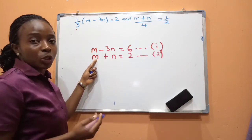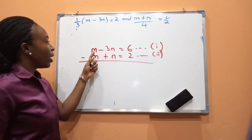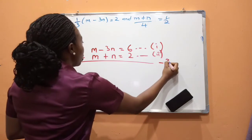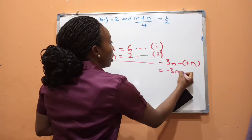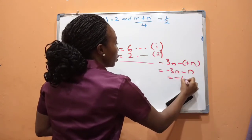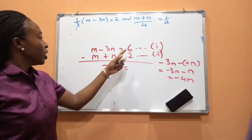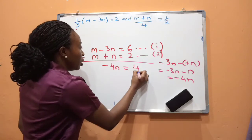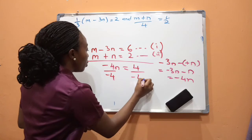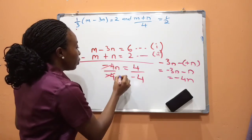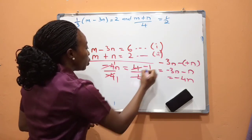Looking at both equations, the m coefficients are already equal, so we subtract directly. m − m = 0; then −3n − n = −4n. On the right-hand side: 6 − 2 = 4. So −4n = 4. Dividing both sides by −4 gives n = −1.